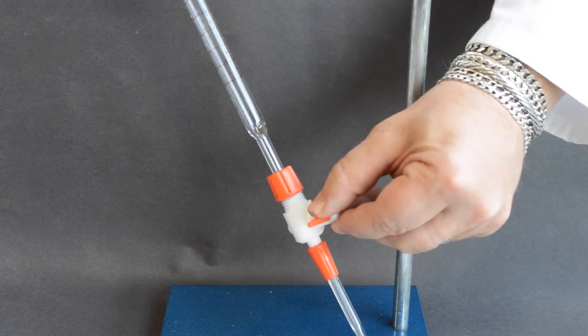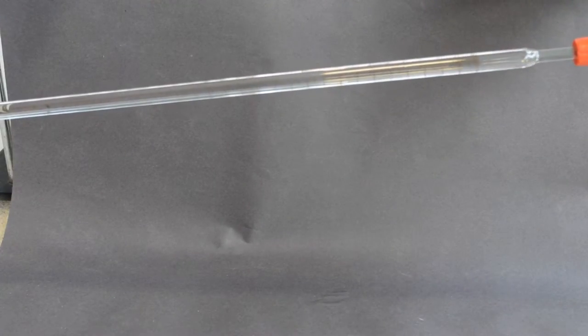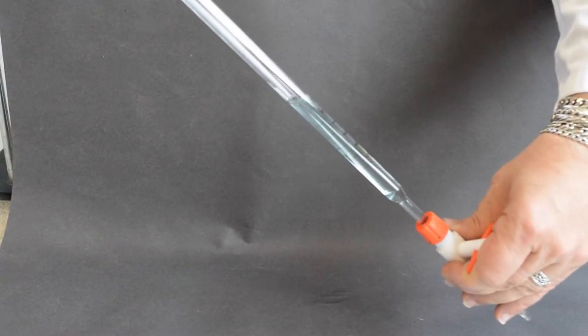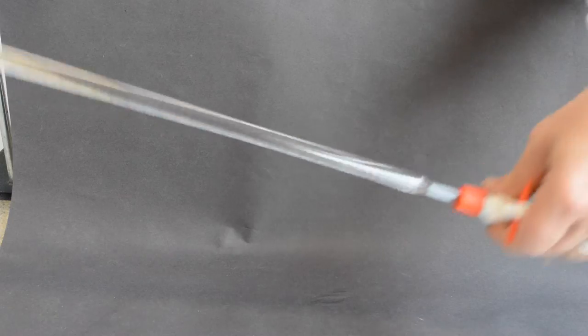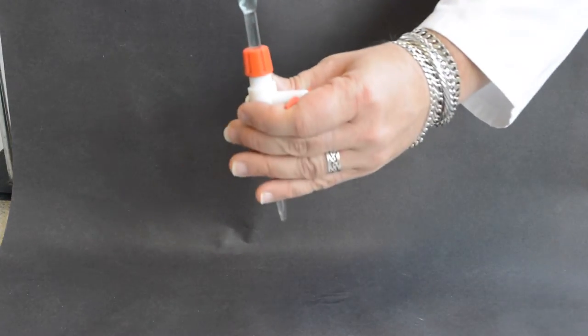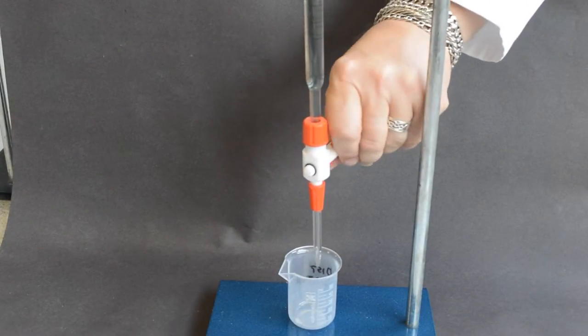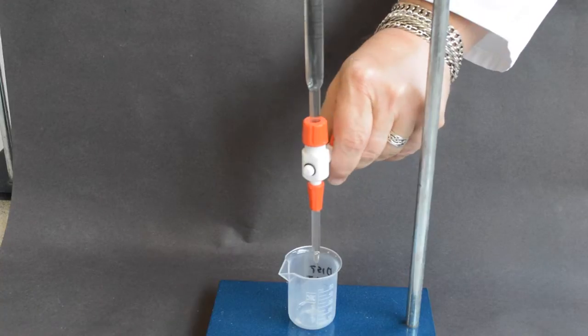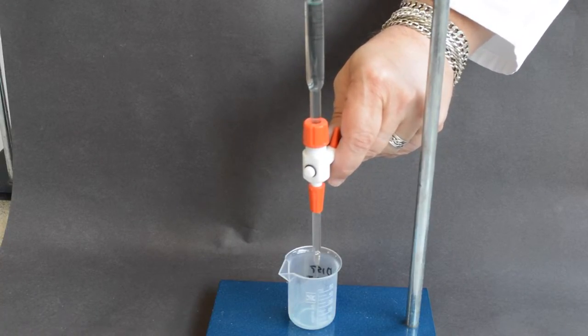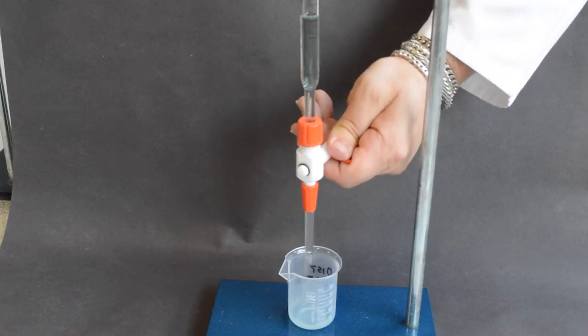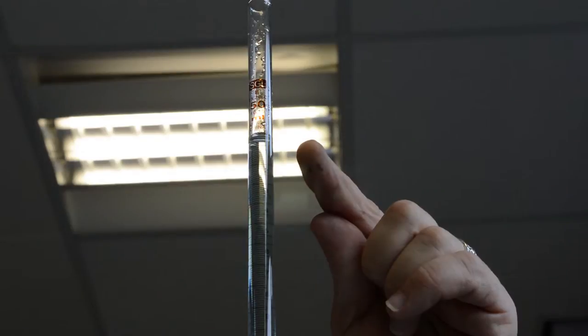Ensure that the burette tap is closed before adding copper sulfate. The burette must be conditioned by using copper sulfate from your sample to rinse through the burette. Open the burette tap and release some of the copper sulfate into a beaker to ensure that there are no air bubbles in the burette tap. Note the initial reading of the volume of copper sulfate in the burette.